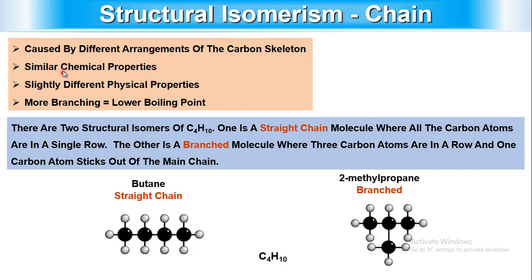For chain isomers, there are two structural isomers of C4H10. The first is the straight-chain form, N-butane, where all four carbon atoms are in a single row with 10 hydrogens attached. The second is the branched form, 2-methylpropane, where three carbon atoms are in a row and one carbon atom branches off the main chain. This type of isomerism is called chain isomerism.